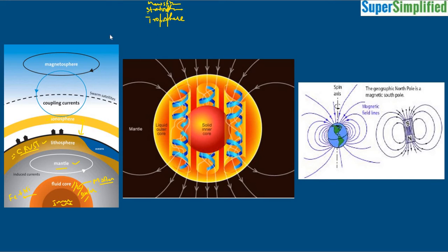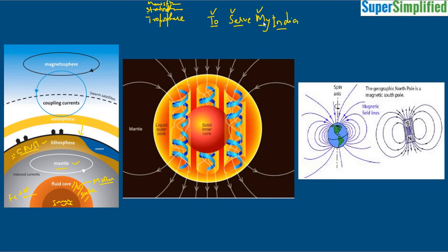Troposphere, stratosphere, mesosphere, and ionosphere. If you find it difficult to remember, a small mnemonic: 'To Serve My India.' So T for troposphere, S for stratosphere, M for mesosphere, I for ionosphere — from down to upper: To Serve My India. This will help you remember the four layers of atmosphere in sequence.